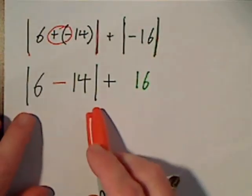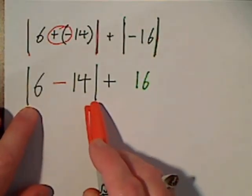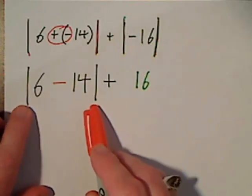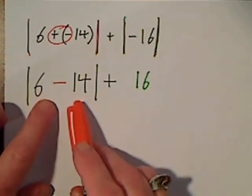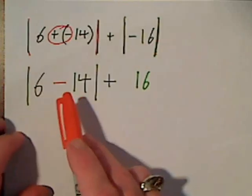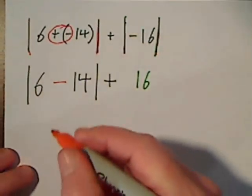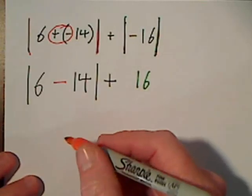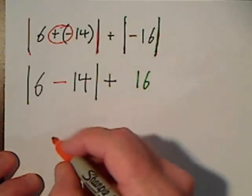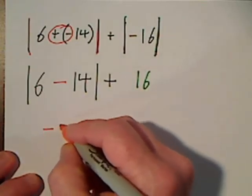Now within this grouping symbol, the absolute value, we still can't take it. We got to solve what's inside here. So positive 6 and negative 14, or the difference of 6 and 14, however you'd like to say this, that yields a negative 8.